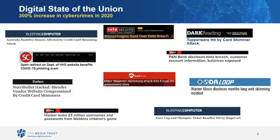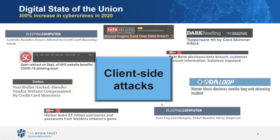It seems a day can't go by without news of some website breach. We have a sampling of 10 significant breaches throughout 2020 that are really across the spectrum — from a nonprofit in Australia to Primo Hoagies to government and even banks. This is clearly a growing problem. The FBI recently released a report stating a 300% increase in cyber crime.